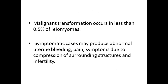These are usually seen in reproductive age people. Malignant transformation can occur in less than 0.5% of leiomyomas. Symptomatic cases may produce abnormal uterine bleeding, pain symptoms due to compression of surrounding structures, and infertility. Usually the patient presents with menorrhagia, metrorrhagia, dysmenorrhea, and infertility.